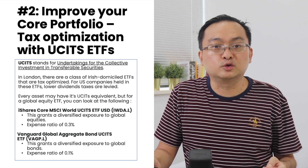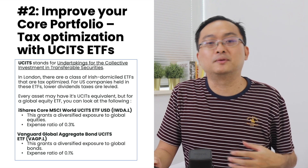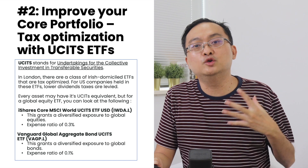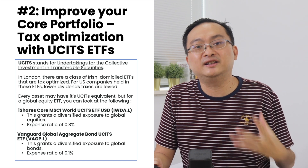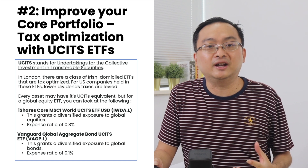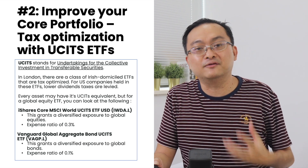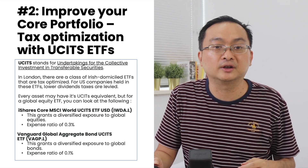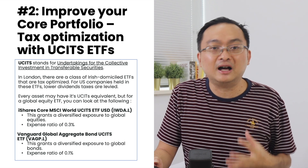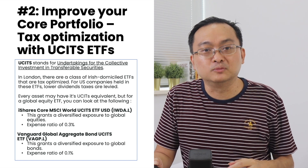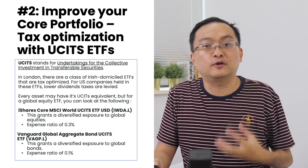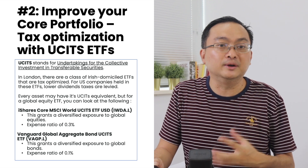The second approach to improving your core portfolio is to perform tax optimization with UCITS ETFs. UCITS stands for Undertakings for the Collective Investment in Transferable Securities. In the London Stock Exchange, there is a class of Irish domicile ETFs that are tax optimized.